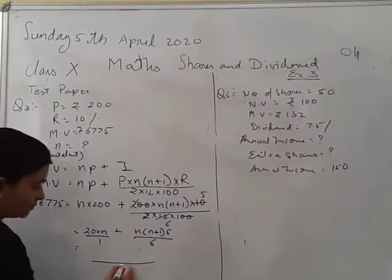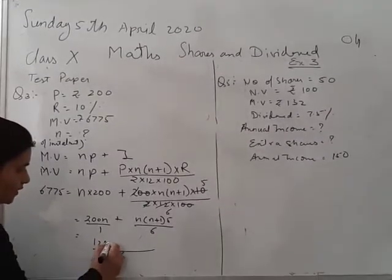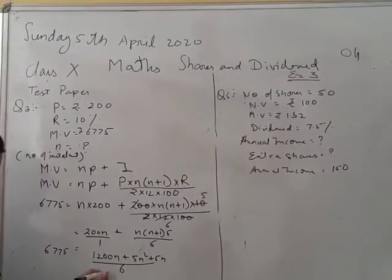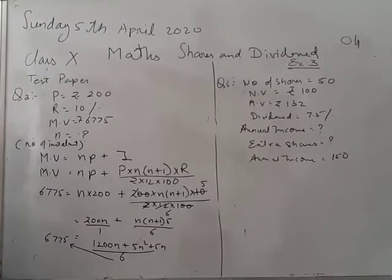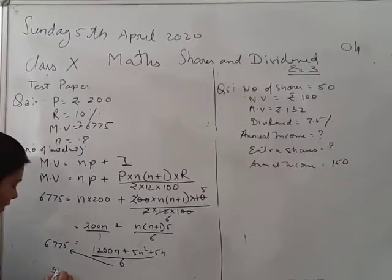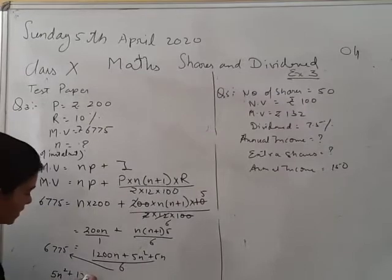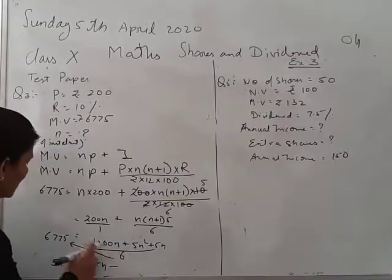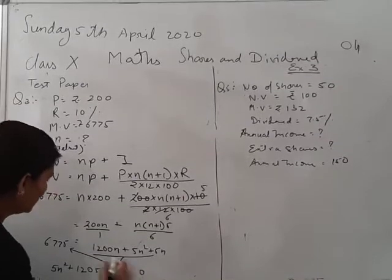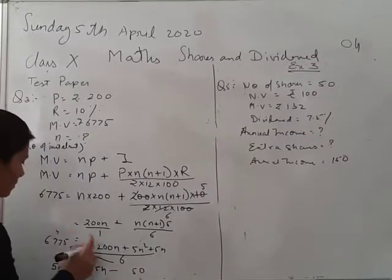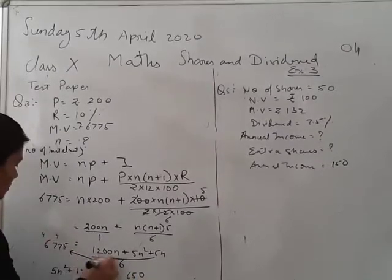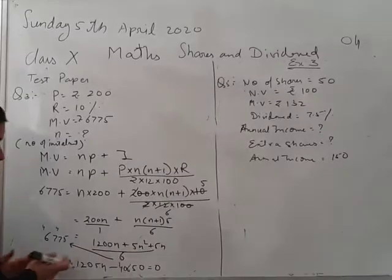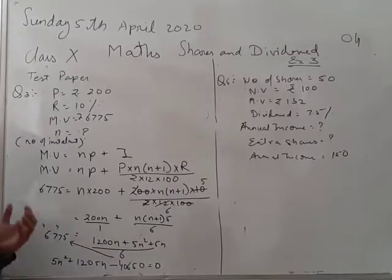Now we will take the LCM. LCM of 1 and 6 is 6, so it becomes 1200N plus 5N² plus 5N all over 6, equals 675. Cross multiplying this gives us a quadratic equation. Multiplying 675 by 6 gives 4050. So the quadratic equation becomes 5N² plus 1205N minus 4050 equals 0.